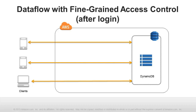Fine-grained access control for DynamoDB is integrated with AWS Identity and Access Management, also called IAM — a technology that allows customers to securely control access to AWS services and resources for their users. IAM roles specify sets of permissions for authenticated users. Fine-grained access control works by allowing your applications to assume IAM roles that specify access to particular DynamoDB items and attributes, or even to entire tables.